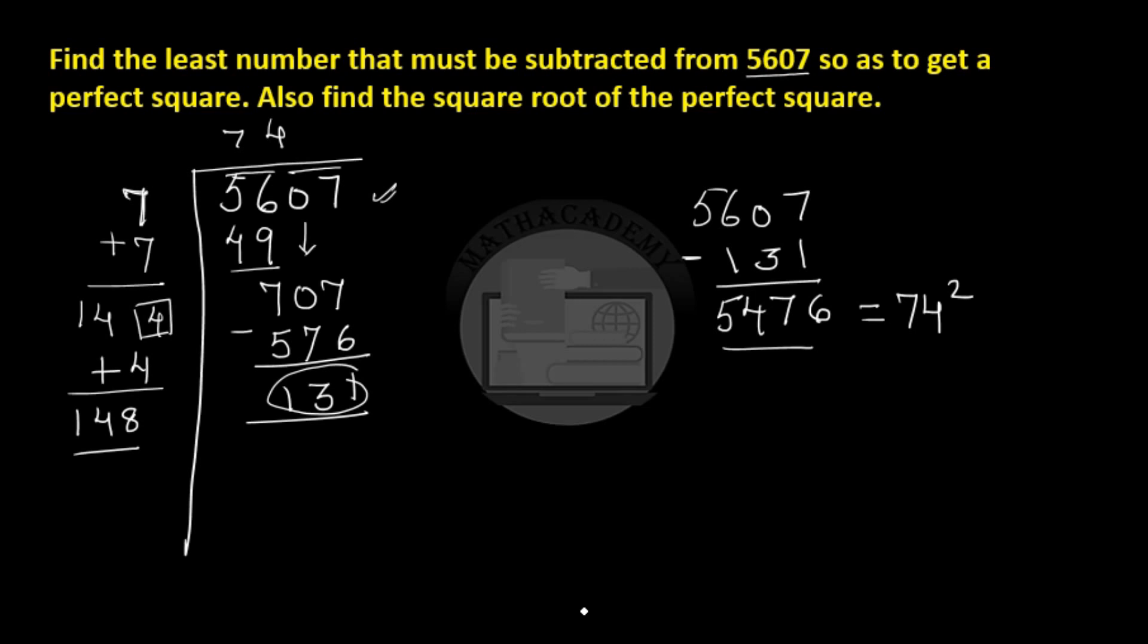So I hope this is clear that whenever the least number that must be subtracted is asked, you take that number, find the square root using the division method, look at the remainder, and subtract that remainder from the dividend.